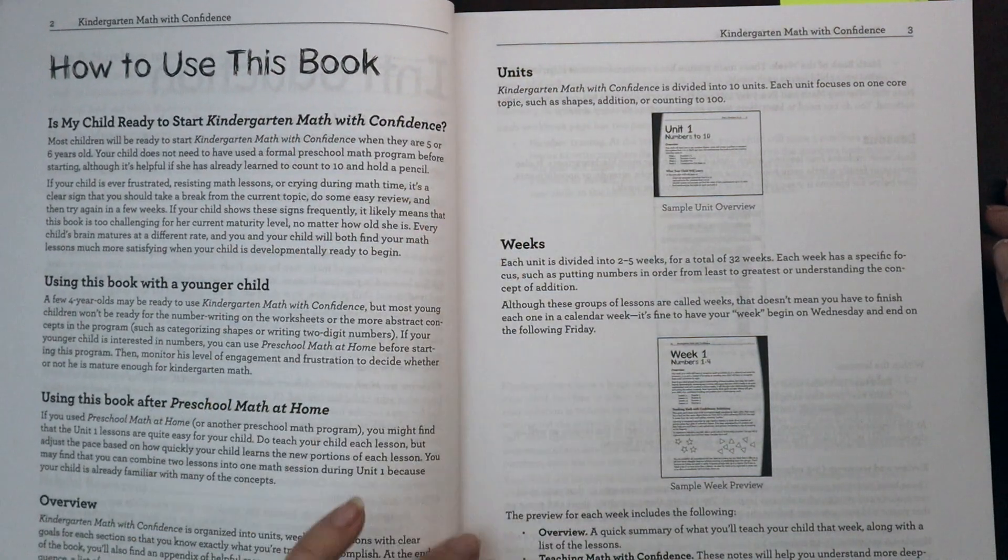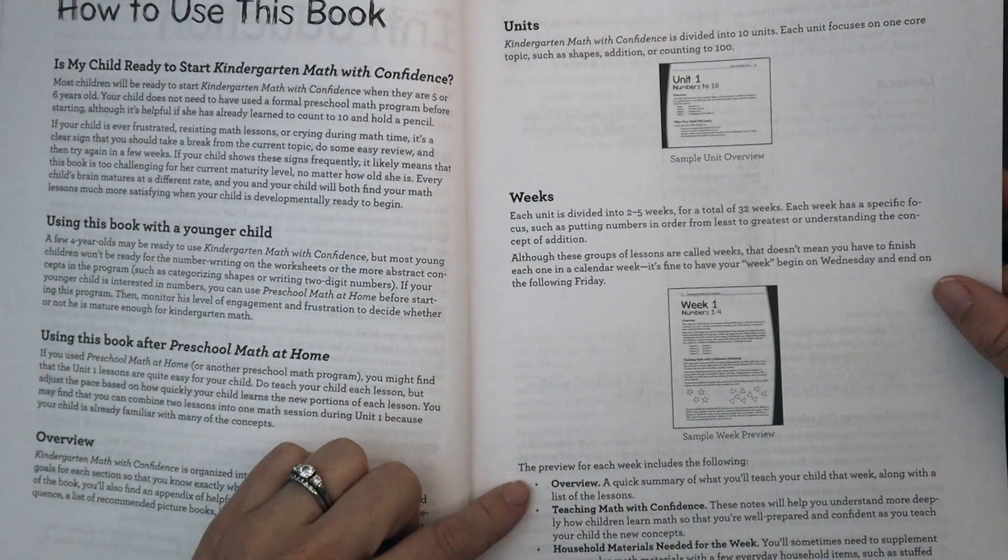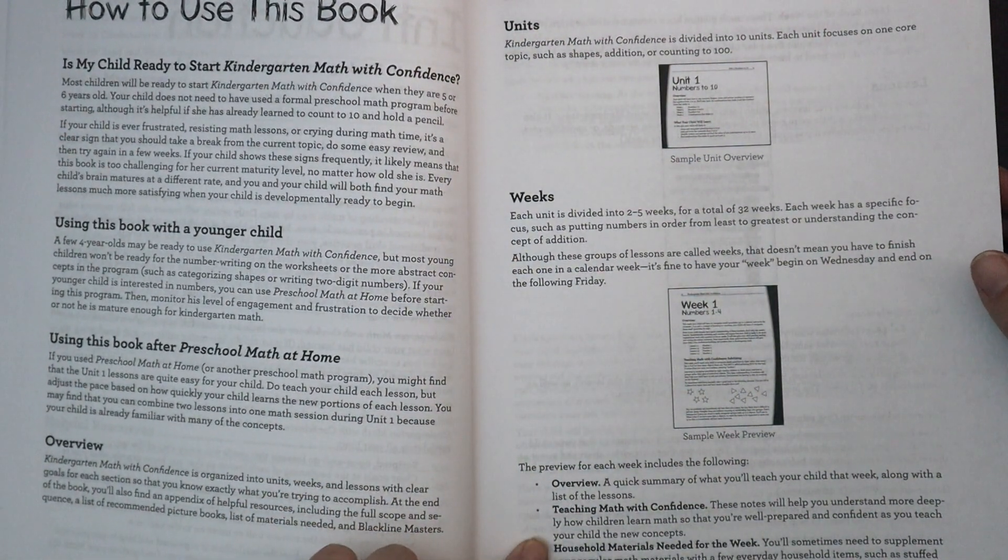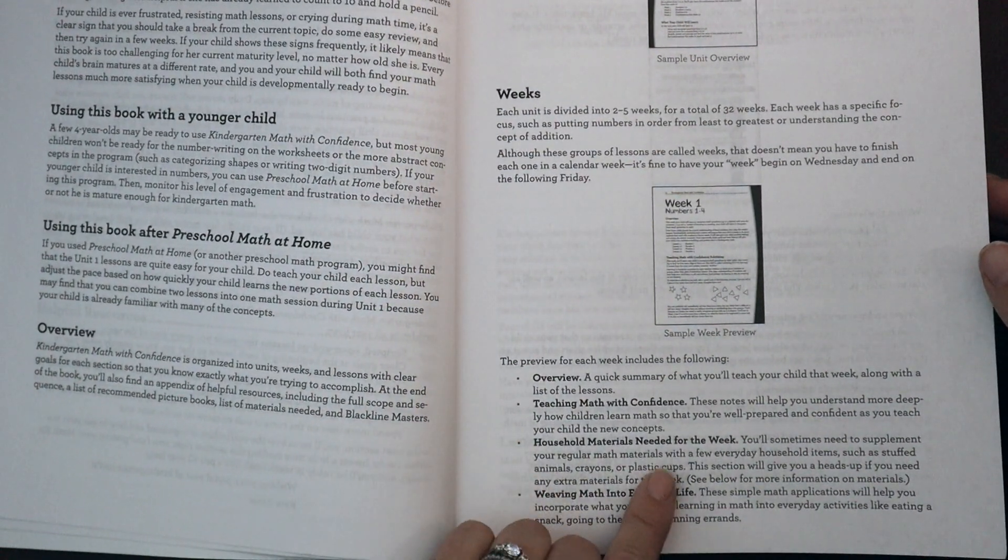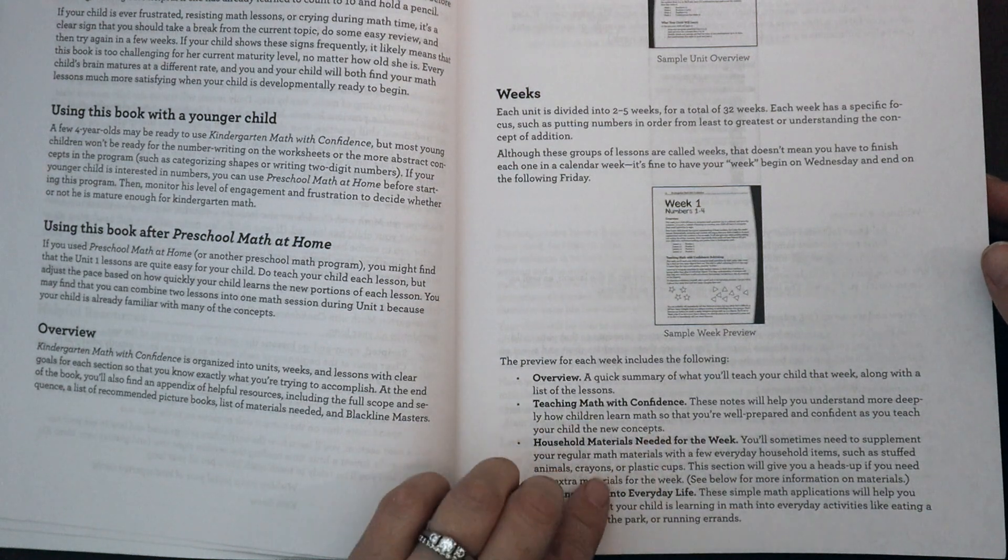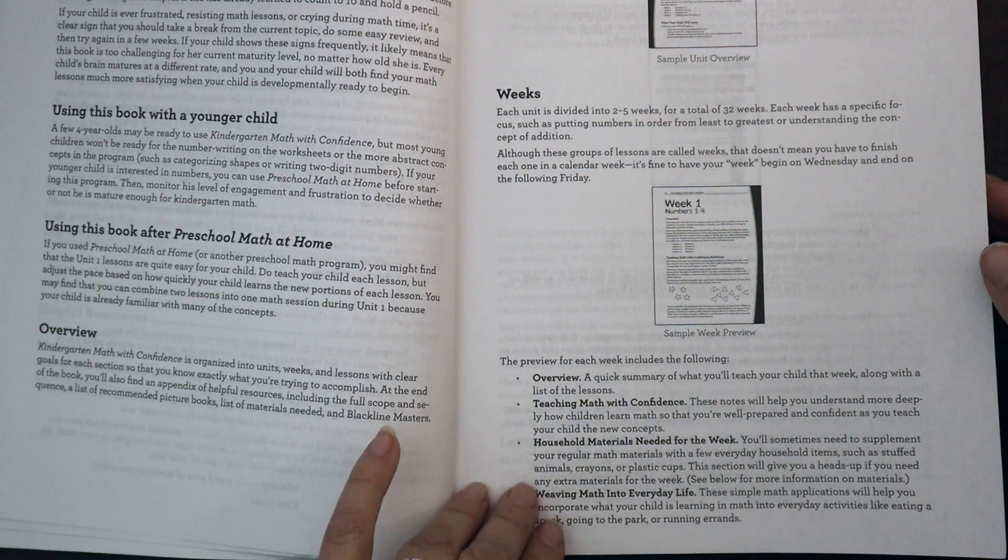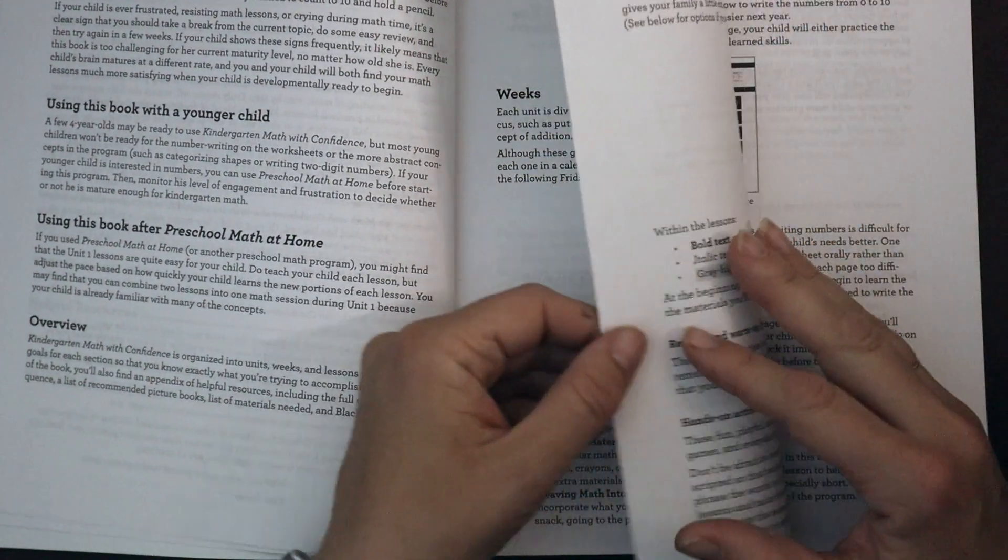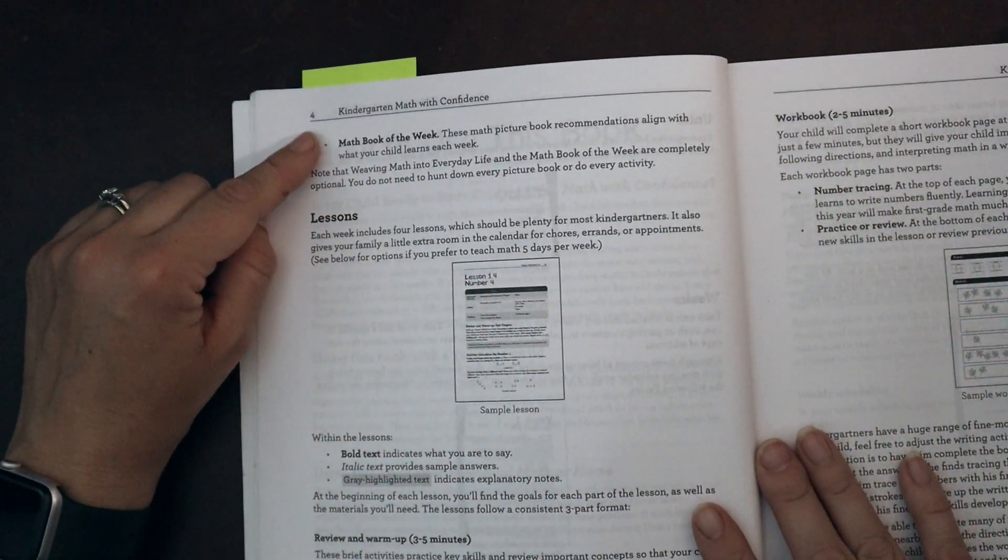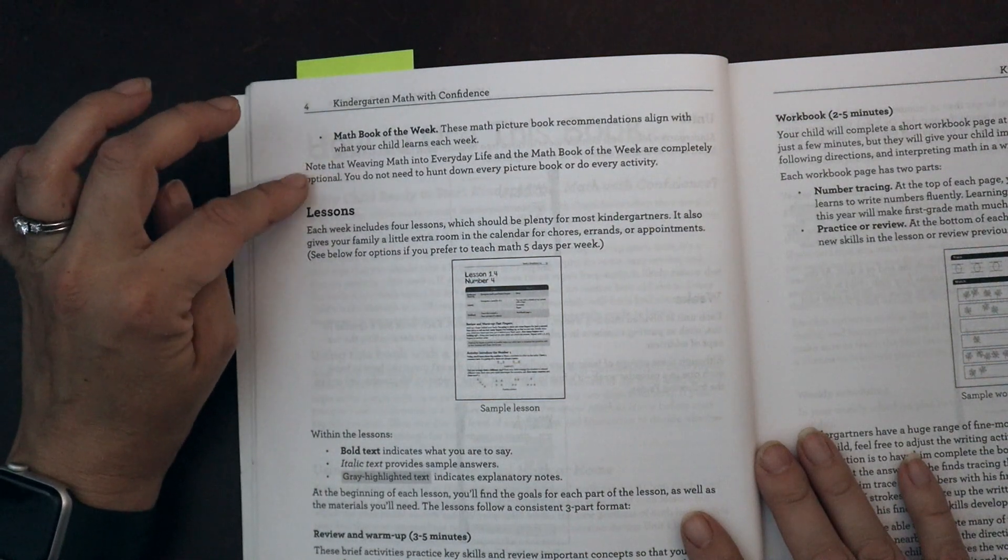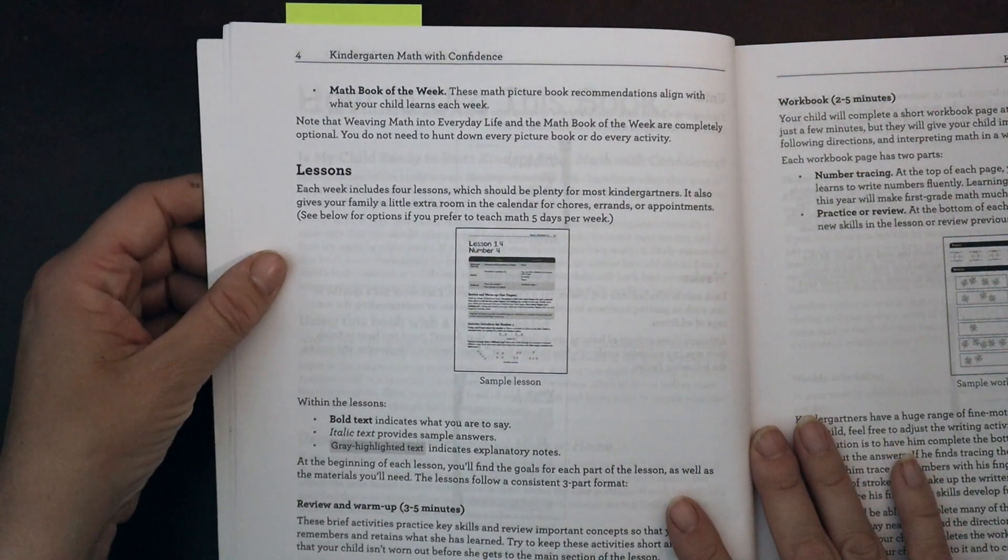Then it has a little overview. We go into the units in the weeks. We have a little bit of an overview. We have the teaching Math with Confidence. So some background information for the instructor. We have household materials you'll need for the week. This is a program that relies on things you already have around the house. There are not many manipulatives that you need to purchase for it. And then weaving math into everyday life and a math book of the week. This is a really nice feature of all of Kate Snow's programs is that they include a title for a math book for every topic.